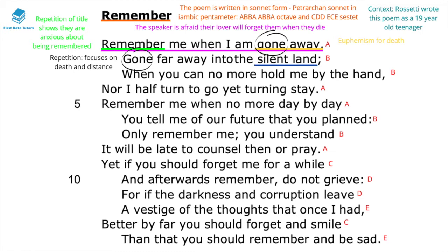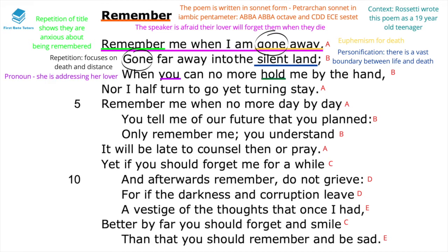The reference to 'the silent land' in line two is a personification of the land being silenced, showing there is a vast boundary between life and death. The speaker feels anxiety that once they have passed away, the lover will stay in the present life and move on. The speaker states 'when you can no more hold me by the hand,' addressing the lover using the second person pronoun. The alliteration of 'H' emphasises the romantic love and companionship she craves, while recognising she can never provide that companionship once she passes away.